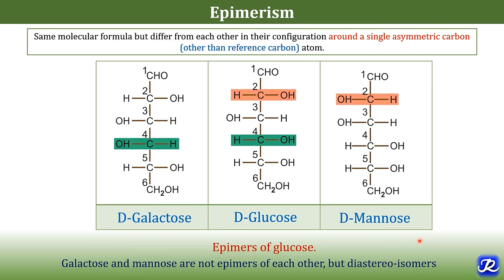The interconversion of epimers is catalyzed by the enzyme epimerase. For example, phosphopentose epimerase catalyzes the conversion of ribulose-5-phosphate and xylulose-5-phosphate.